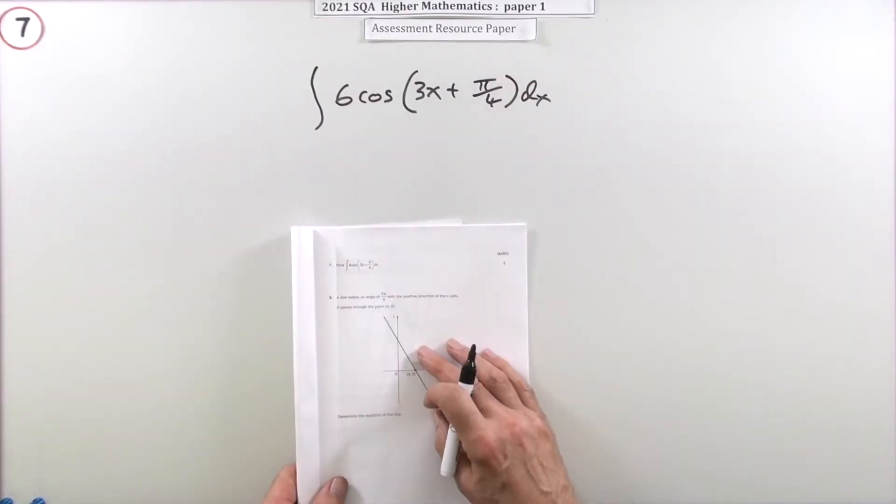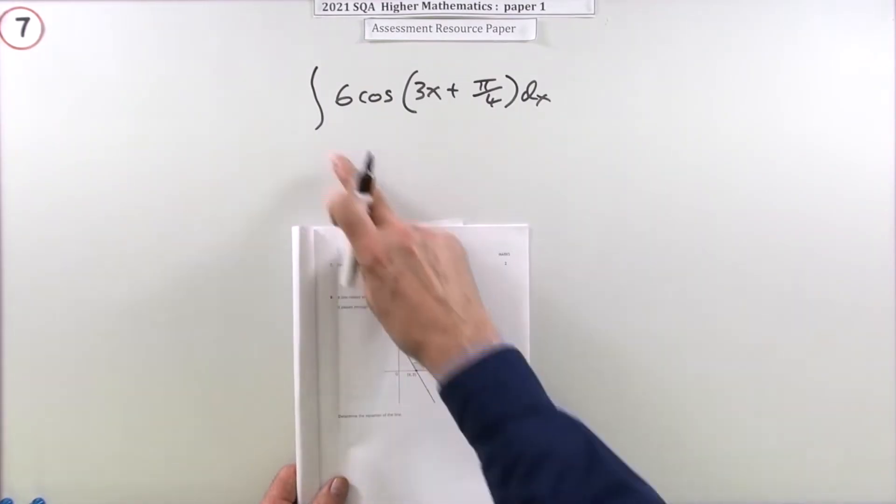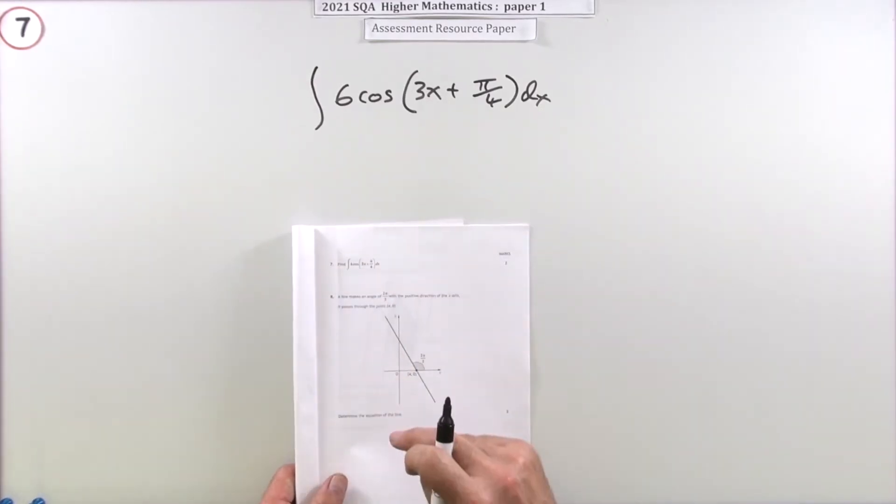So question seven then from the 2021 Higher Maths Paper 1 resource paper. Just a little two-mark question. Carry out this integration here.